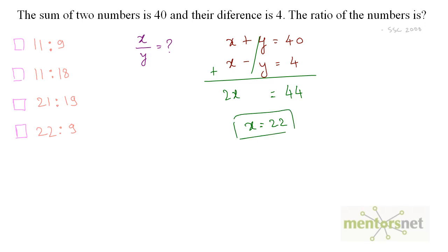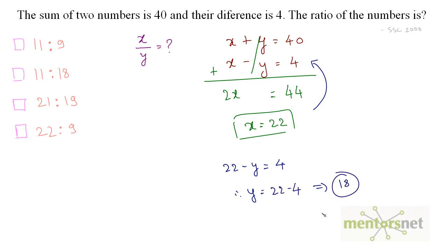We have the value of x as 22. Now find the value of y by substituting into equation 2: 22 minus y equals 4, therefore y equals 22 minus 4, which equals 18. So x is 22 and y is 18. We have been asked x by y, which equals 22 by 18. Reducing: 2 times 11 is 22, 2 times 9 is 18, so the answer is 11 by 9.